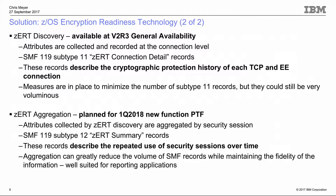The information Discovery collects is written out in an SMF 119 subtype 11 record — called a zERT Connection Detail Record. These records describe the cryptographic protection history of each TCP and Enterprise Extender connection. By looking at these records, you can tell from connection establishment to termination what the cryptographic protection looked like, even if it changed over time. Obviously there can be a lot of these records, so we've taken measures to minimize their number.